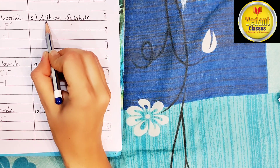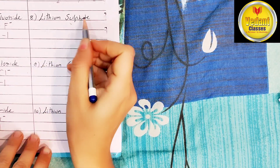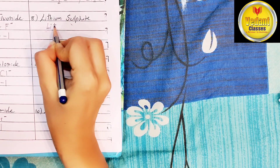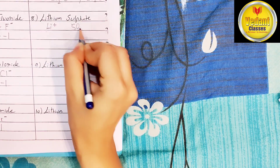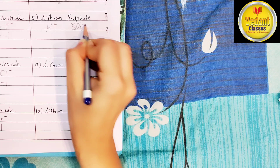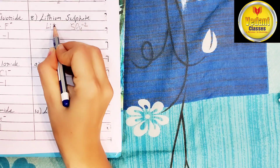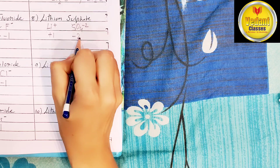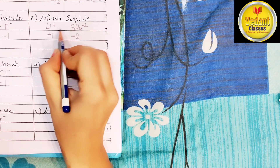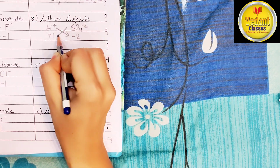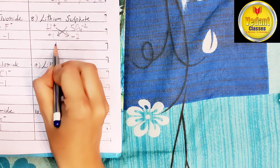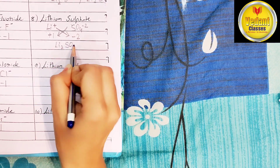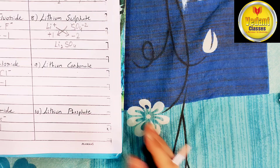Lithium sulfate: lithium ion is written as Li+, sulfate ion is written as SO4 2-. Valency of lithium ion is plus 1, sulfate ion is minus 2. Now cross the valency. Compound will be Li2SO4 — lithium sulfate.